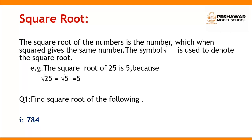There are two methods of finding square root. The first method is the factorization method and the second method is the division method. You already know how to solve square root by the factorization method, so now we will learn how to simplify square root by the division method. Question number one: find the square root of the following by the division method.